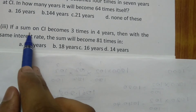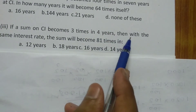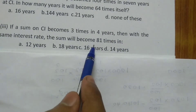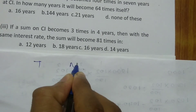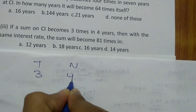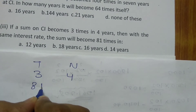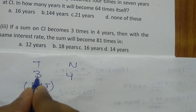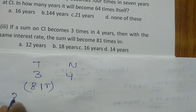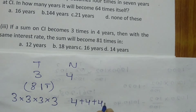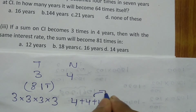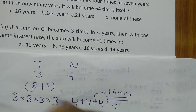If a sum at compound interest becomes 3 times in 4 years, in how many years will it become 81 times? Represent 81 in terms of 3: 3 × 3 = 9, 9 × 3 = 27, 27 × 3 = 81 — that is four multiplications. On the right-hand side: 4 + 4 + 4 + 4 = 16. So in 16 years the amount will become 81 times.